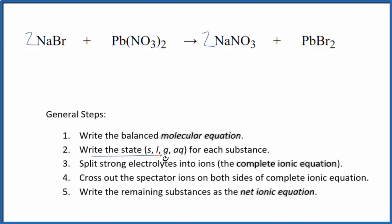Now we need to write the state for each substance. So bromides, in general, and sodium compounds are very soluble with a few exceptions. Put AQ there. Nitrate is very soluble. AQ, that's going to dissolve, dissociate into ions. Sodium nitrate, aqueous.